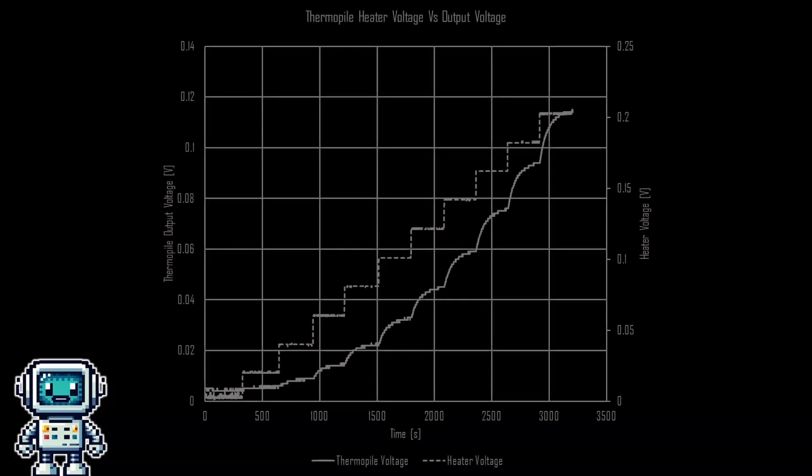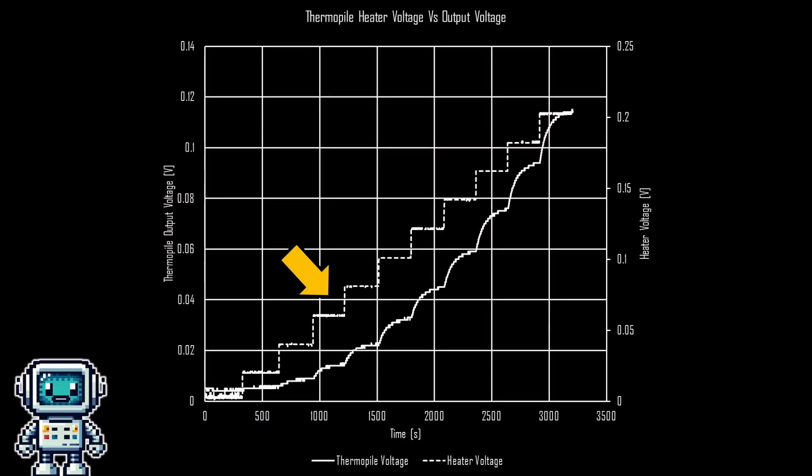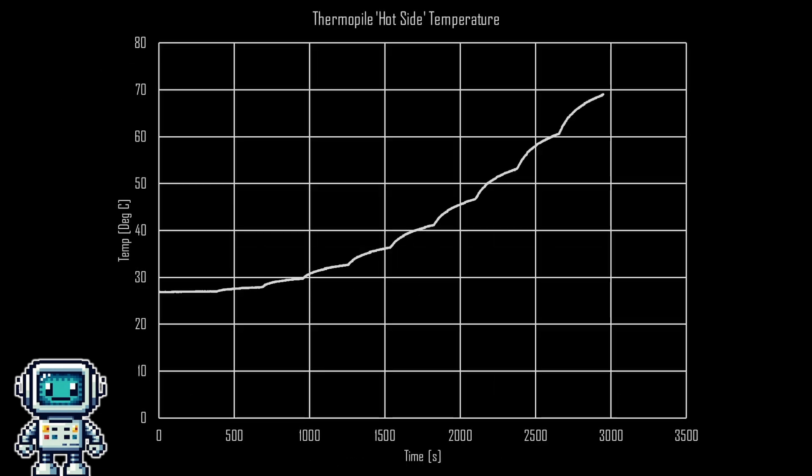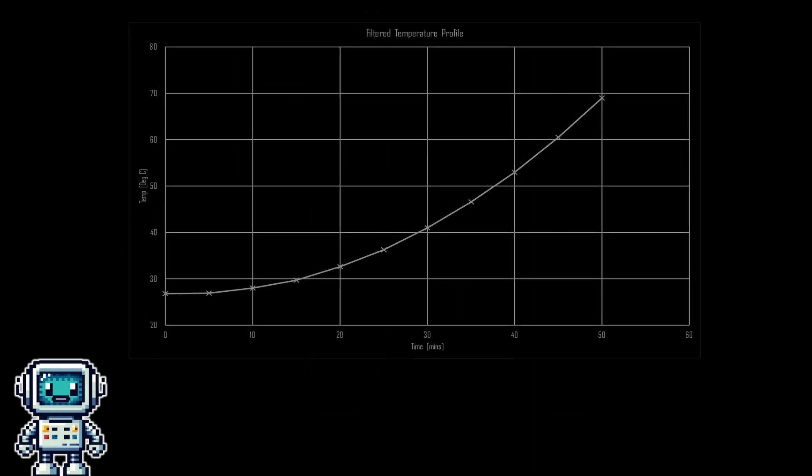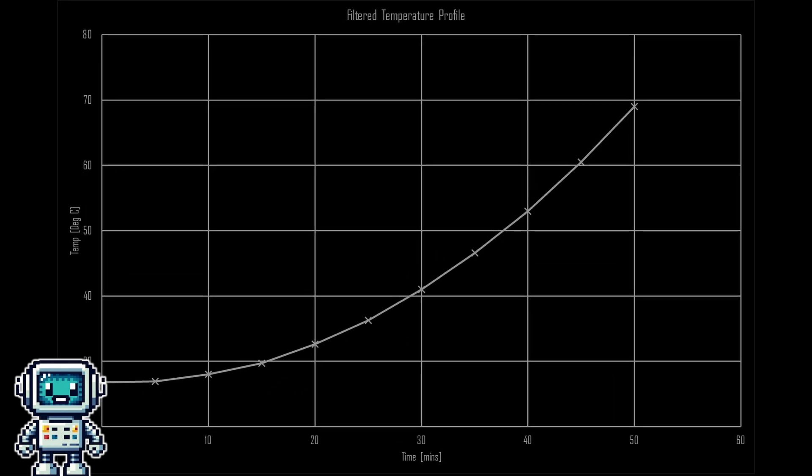Looking at the raw data collected, here you can see the applied heating voltage and also the output voltage from the thermopile. The thermopile output voltage follows a square law relationship, which is to be expected. The input power increases with the square of the applied heater voltage. This is the raw temperature data from the heater resistor, which again follows a square law relationship. If we take the average of the stabilized temperatures, we get a really accurate square law curve, even with only 11 data points.